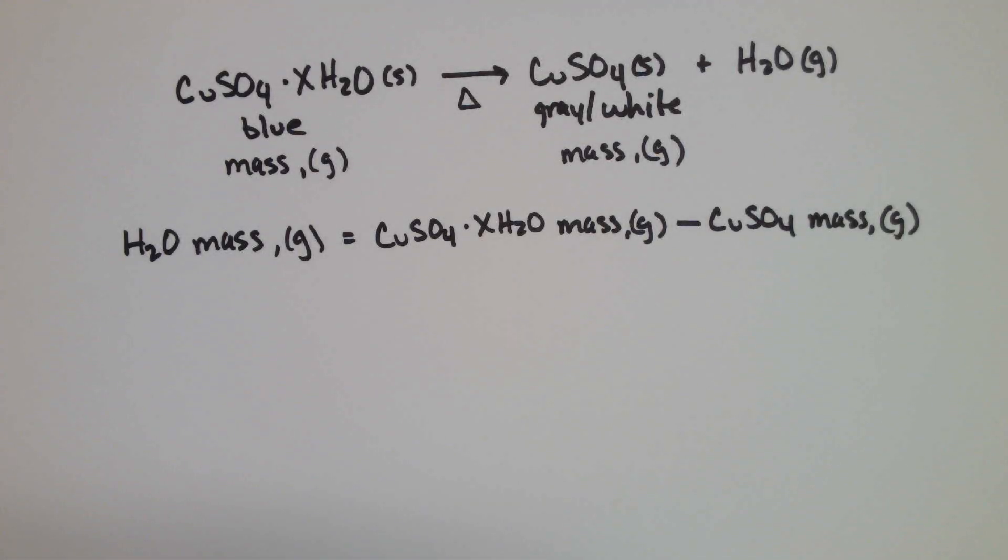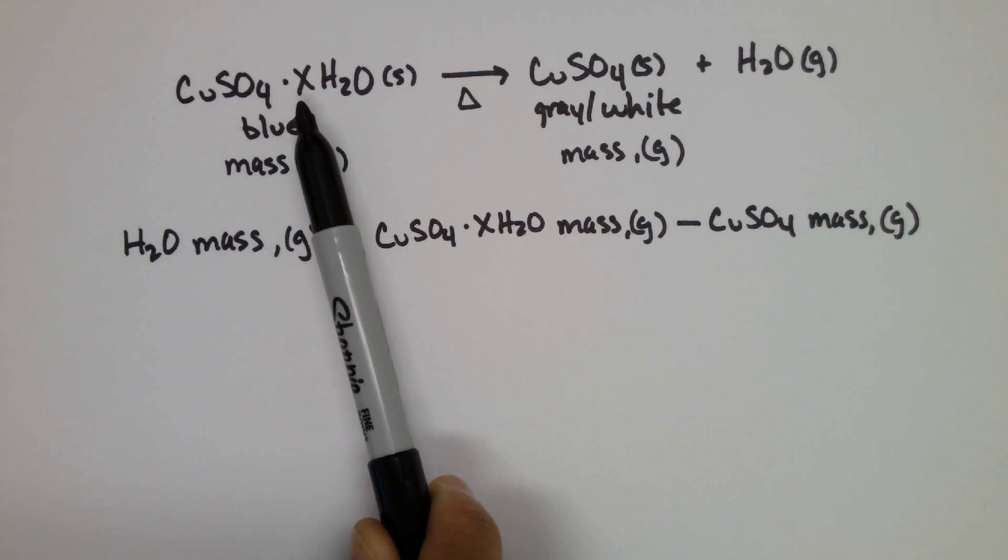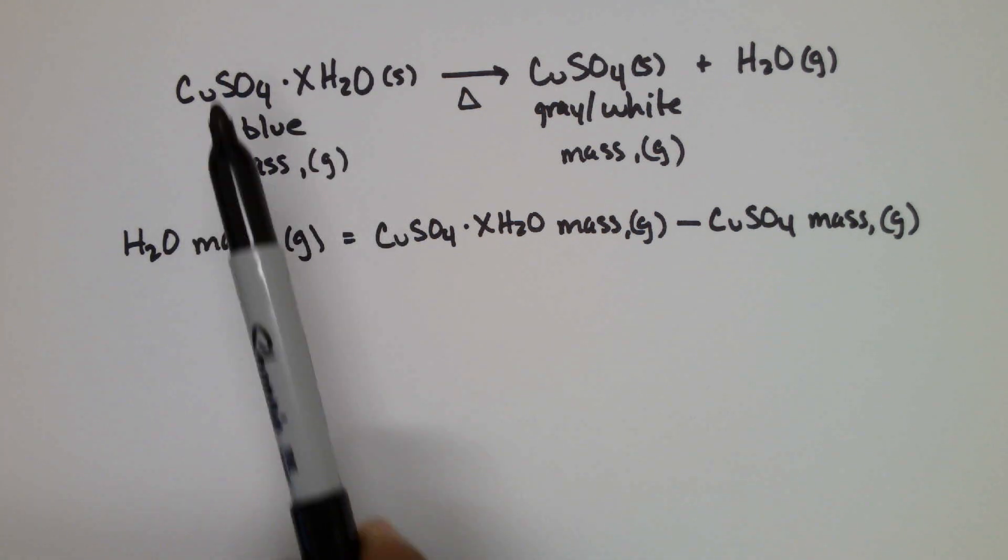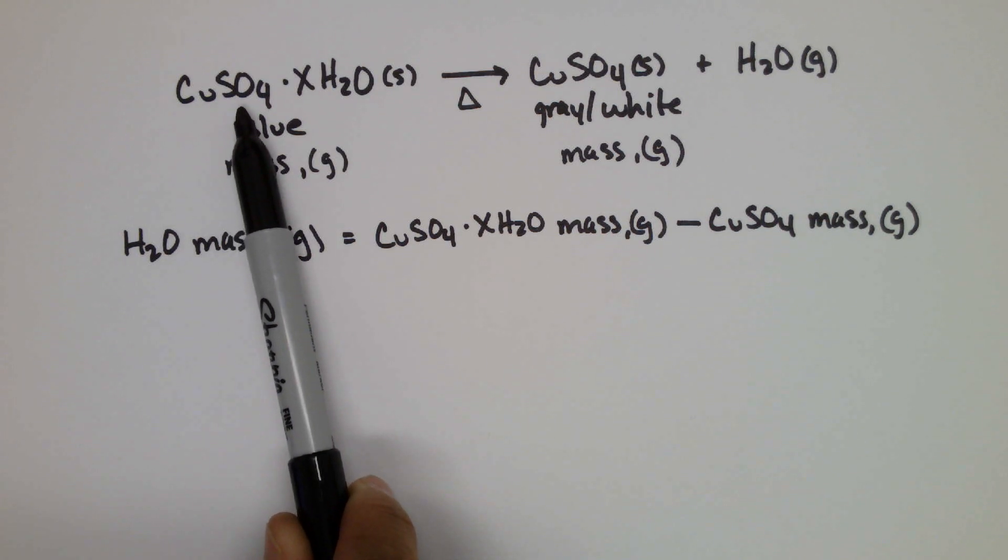In this experiment, we're going to determine the formula for a hydrate. A hydrate is an ionic compound that actually contains water molecules as part of its crystal lattice. There are many different types of hydrates.